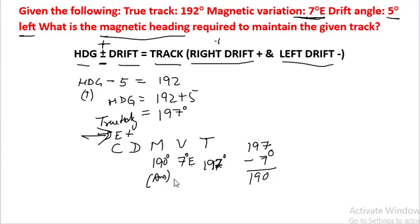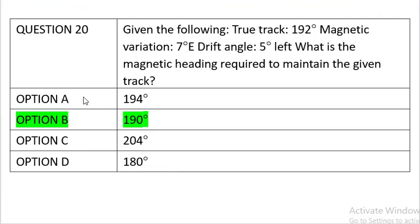I will be doing dedicated questions on CDMVT later for better understanding. Option B is 190, which is our answer. The correct option is option B.